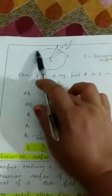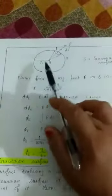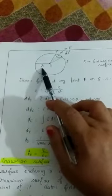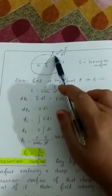So point charge Gaussian surface is spherical. It is a sphere. Its radius is small r. We will consider one point P.